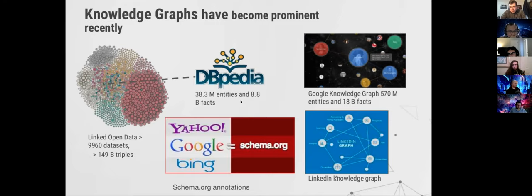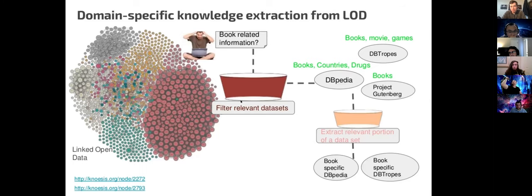DBpedia is extracted from Wikipedia and is one node in this linked open data. There is also a Google knowledge graph, schema.org annotations, and many other things. This shows some process of extracting from linked open data to create a knowledge graph for books or movies.